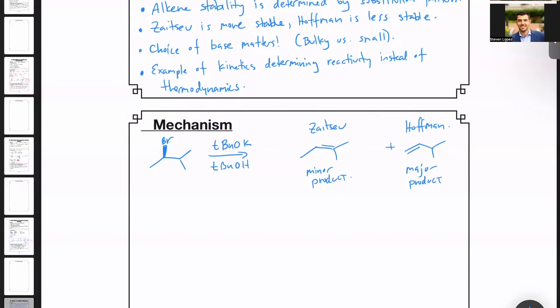If we take a quick look at these two, the minor product is actually the more substituted alkene, and the major product is the less substituted alkene. This might be a little confusing because you would think that the Zaitsev product, the one that's the most substituted, the most stable, would be the preferred product.